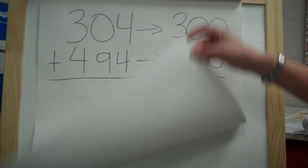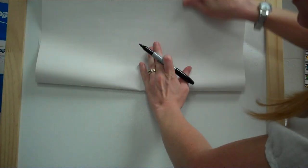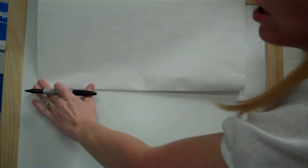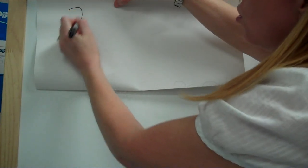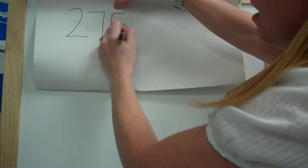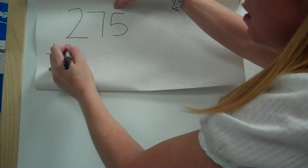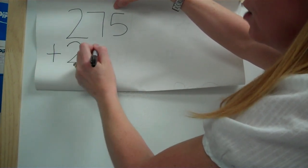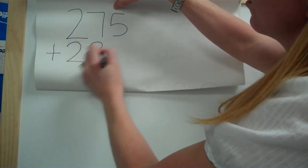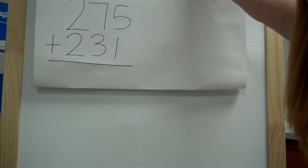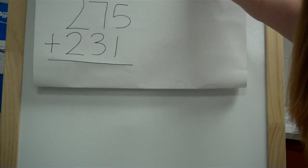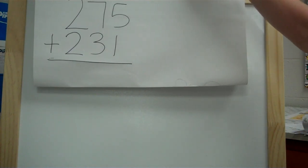All right, so I'm going to give you a problem to solve for tomorrow. I'm out of paper, so I'm just going to do it on the back here. All right, so bring with you to class tomorrow the answer to this. Let's do 275 plus 231. Okay, so you're going to round that to the nearest hundred and estimate the sum, and bring that with you tomorrow to class. That will be your ticket into math class.